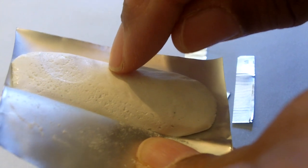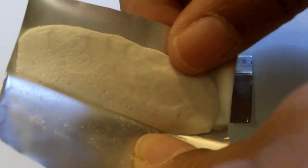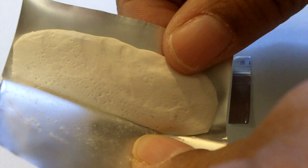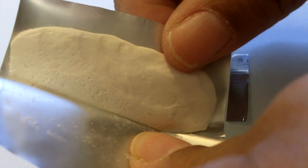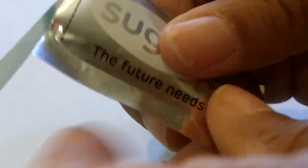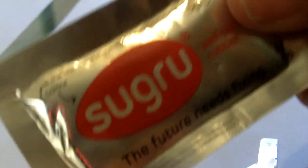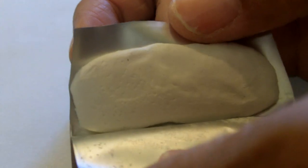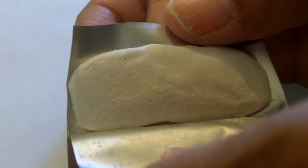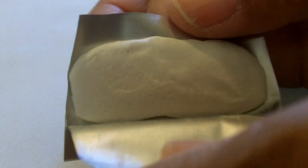And if you have something, say for example, something in your freezer broke and you need to repair it, this is good to 50 below zero. The other thing about Sugru is it comes in different colors. So what I'm going to do is repair something so you can really get what I'm talking about here and the possibilities are endless of what you can repair.